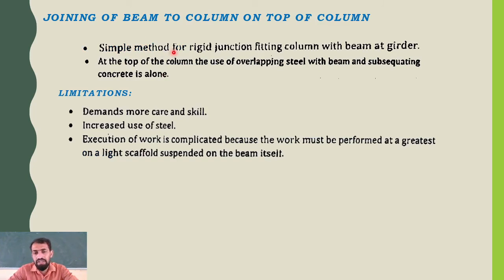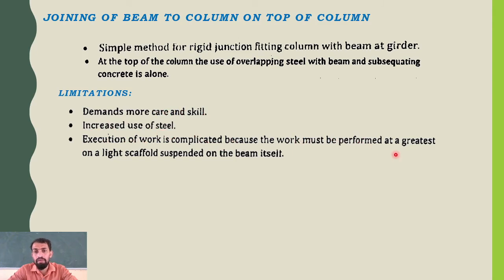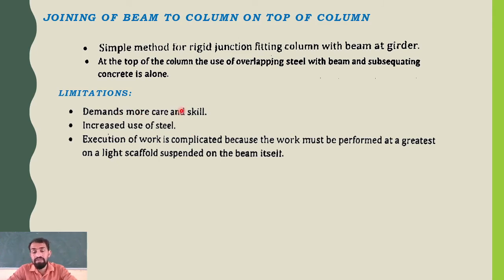A simple method for rigid junction is fitting the column with a beam or girder at the top using overlapping steel and subsequent concreting. Limitations: it demands more care and skill; the work must be performed at height on a light scaffold suspended on the beam itself; and the use of steel is more in this particular type of connection.